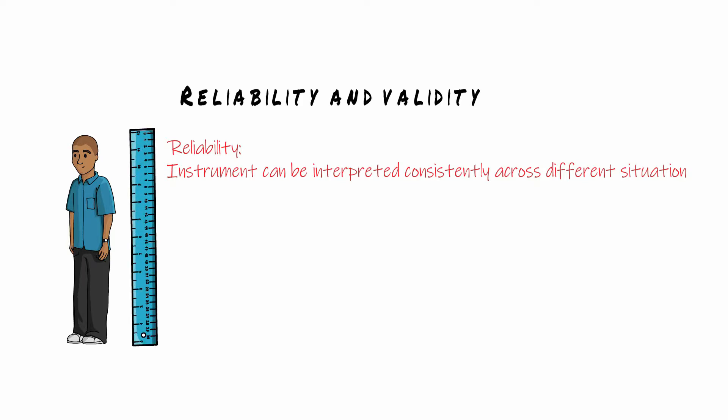But let's say you get 175 cm one day, 185 and 182 cm. In this case you can say the ruler I'm using is unreliable.